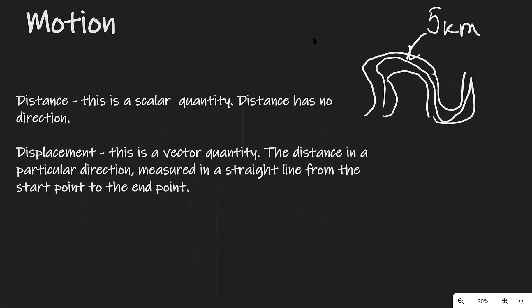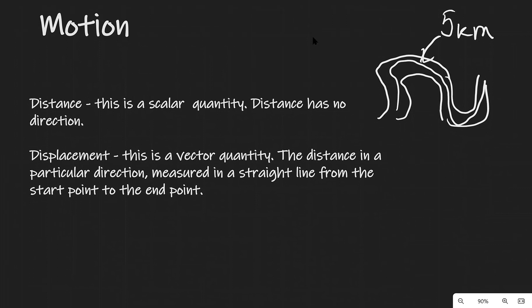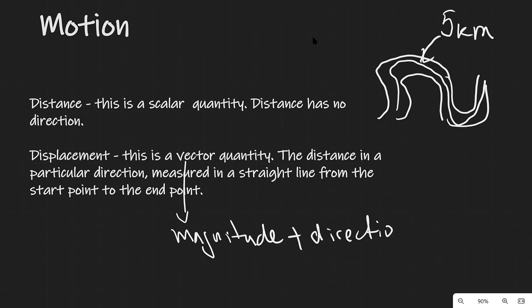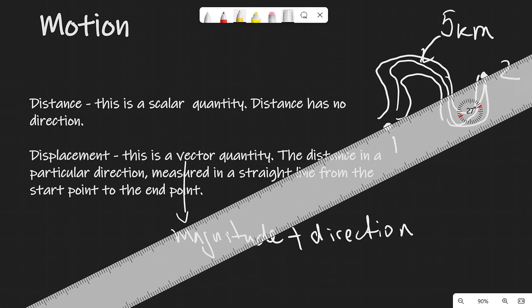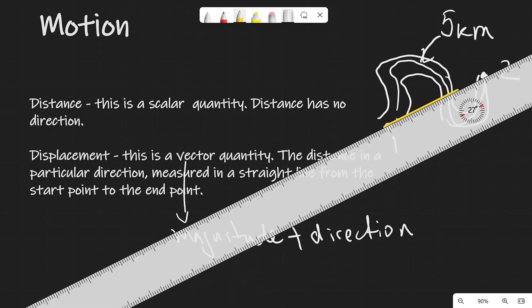On the other hand, displacement is a vector quantity. This means that it has both a magnitude and a direction. The displacement is defined as the distance in a particular direction in a straight line from the start point to the end point. So if our start point is here and our end point is here, the displacement would be a line between the two.